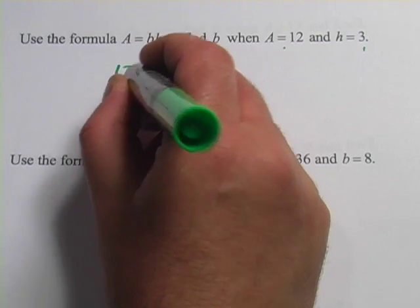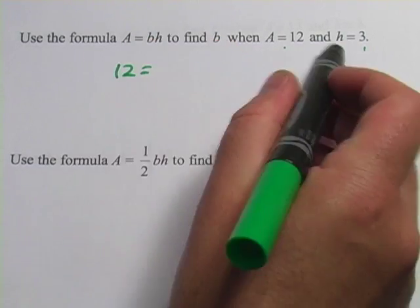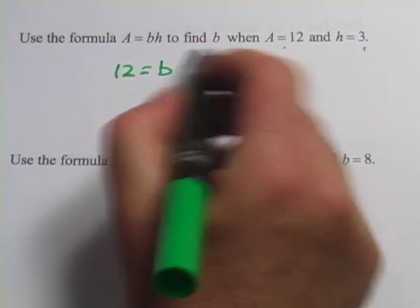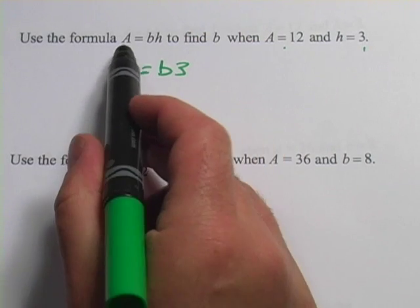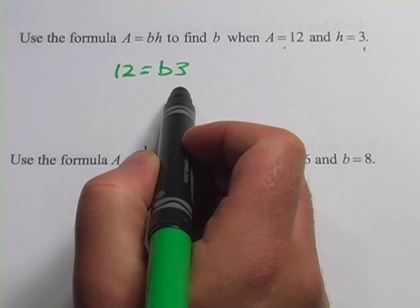So A is 12, b we don't know so we just leave that, and h is 3. So we've got a formula now that instead of saying A equals b times h, says 12 equals b times 3.